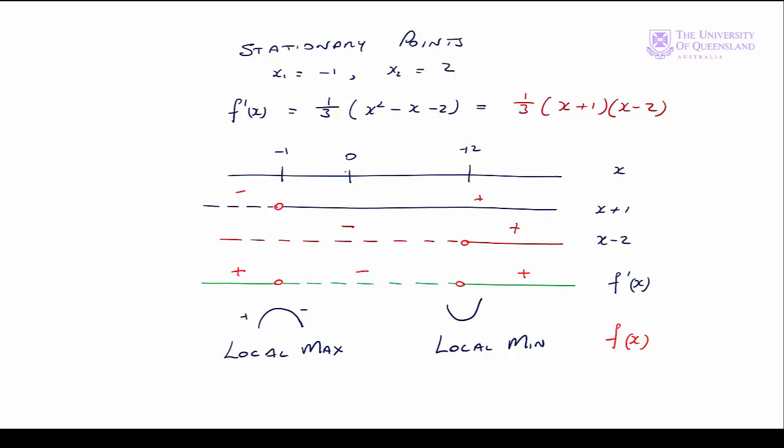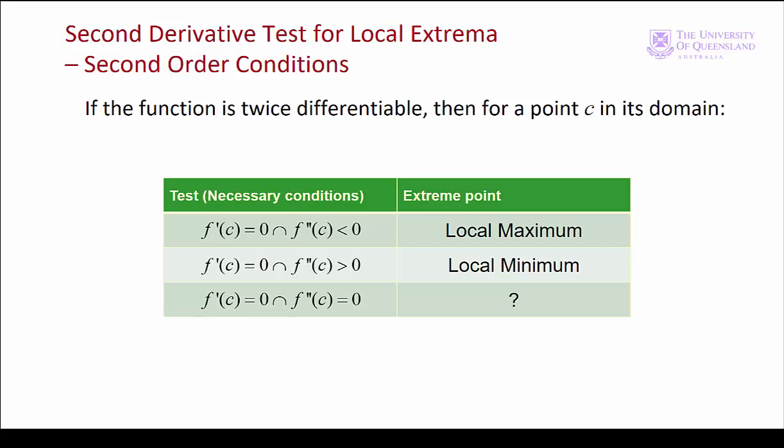At x = −1, the first derivative is going from positive to negative, so the second derivative must be negative. The second derivative test — also known as the second order conditions — states: given a twice differentiable function with a stationary point at x = C, if the second derivative is negative (less than zero), that stationary point is a local maximum; if the second derivative is positive (greater than zero), that stationary point is a local minimum. The case when the second derivative is zero will be dealt with in Module 3.